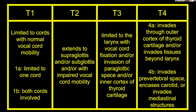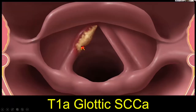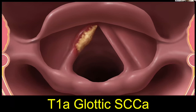The vocal cords themselves are lymphatic poor and vascular poor, so they're much less likely to show up with a lymph node. We usually don't image these — the surgeon sees it, scopes it, lasers the lesion and they're done. A small lesion on one cord that doesn't cross midline is a T1A. If it crosses midline, that's automatically a T1B. The anterior commissure should just be a millimeter thick — if it's too thick, we think about tumor crossing over.